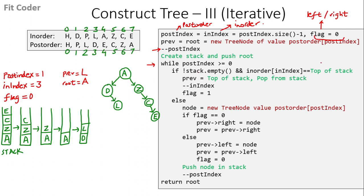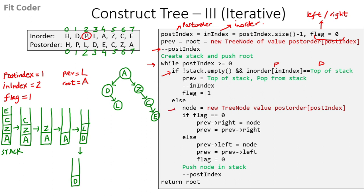In the next iteration, top of the stack is L and the inorder index is also pointing to L — equal. We set previous to L, pop L from the stack, decrement inindex to 2, and set flag to 1. In the following iteration, top of the stack is D and the inorder index is pointing to P — not equal. We create a new tree node with the first postorder index, which is P. Flag is 1, so left of L (previous) becomes P. Previous is now P, and flag becomes 0. We push P in the stack and decrement postindex to 0.